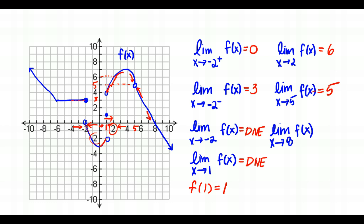Finally, the limit as X approaches 8 of f of X. As I get close to 8 from the right and from the left, I'm getting closer to a Y value of 0. It's a filled-in circle with no hole in the graph, and from both sides of 8 we approach 0. So we've completed the first example and now we'll look at the next example, which includes limits at infinity and infinite limits.